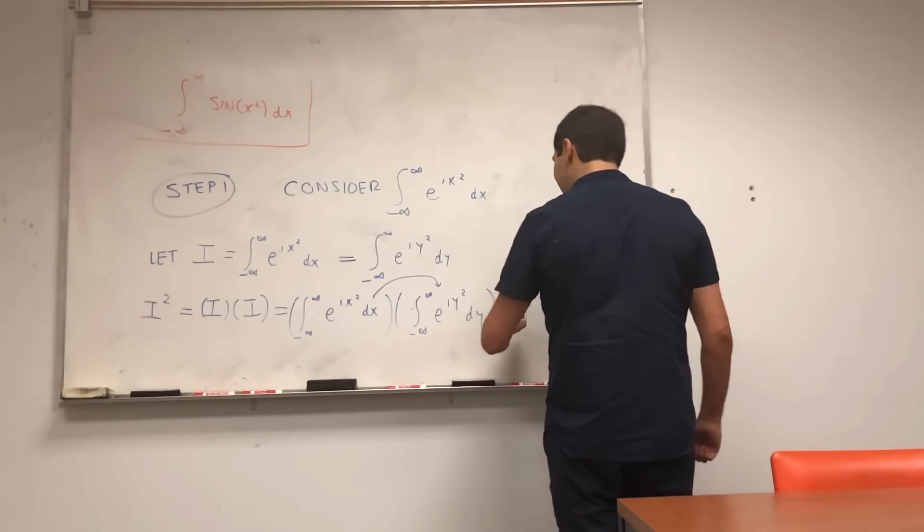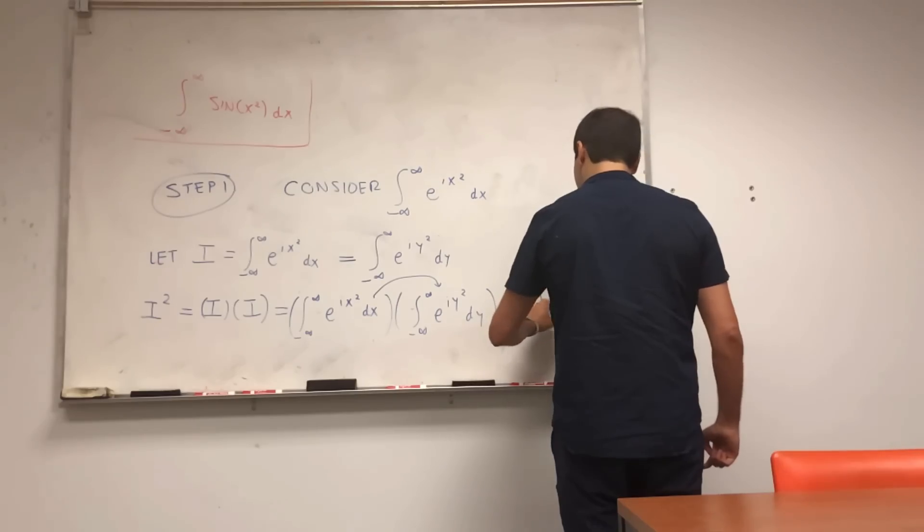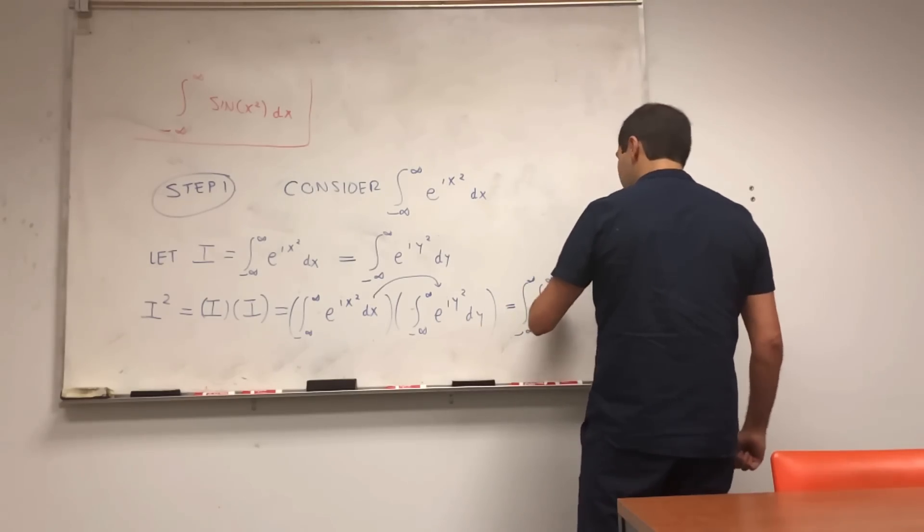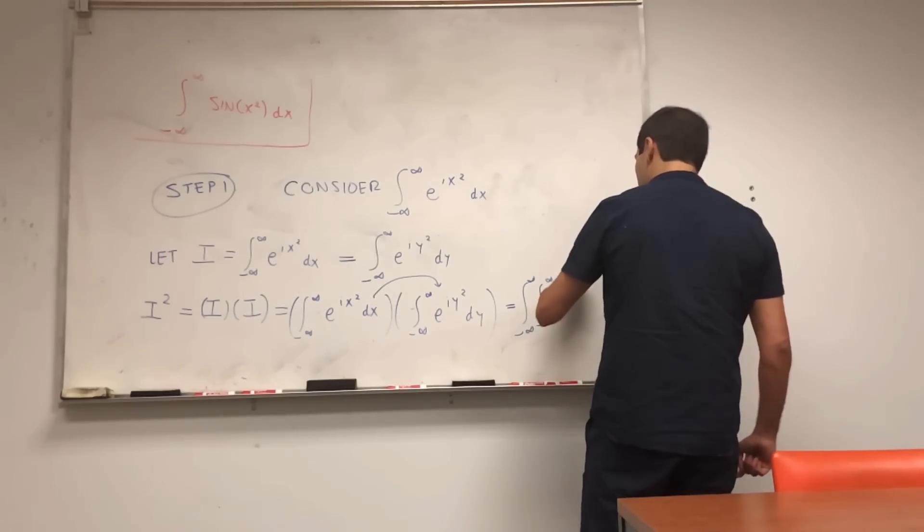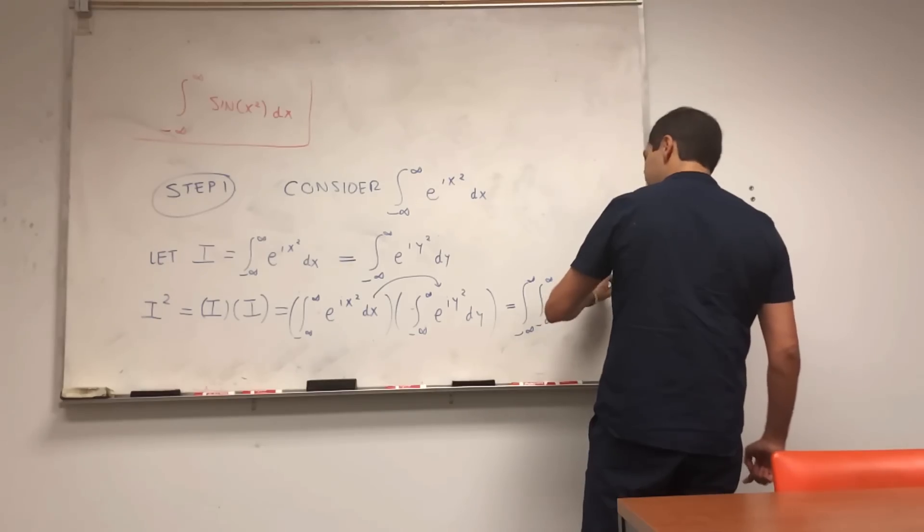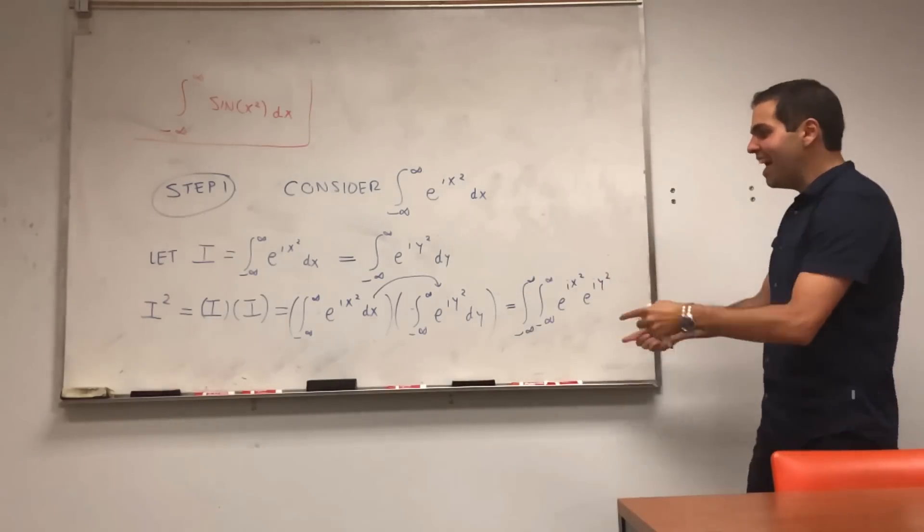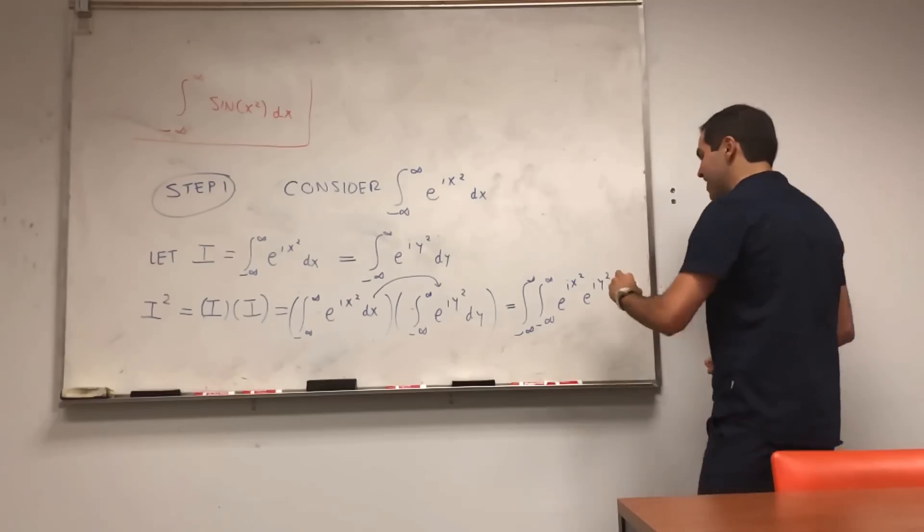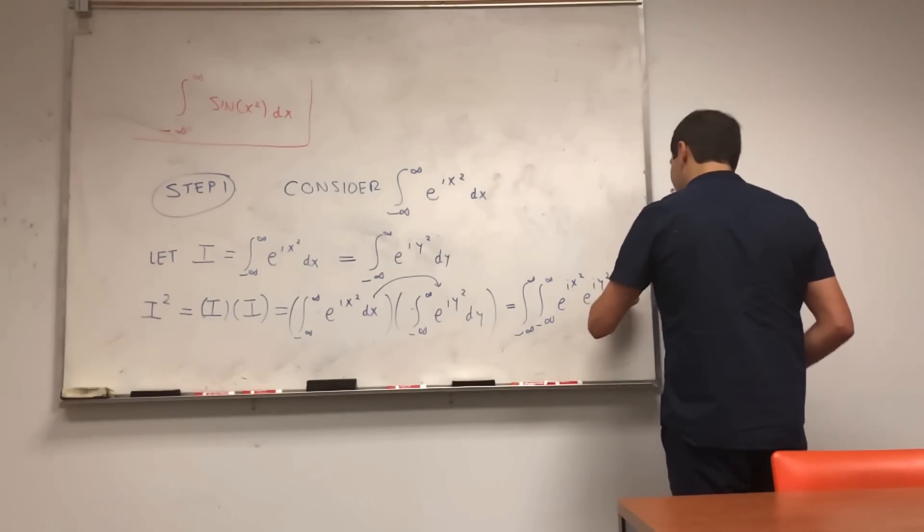And what we really get is a double integral of e to the ix squared, e to the iy squared, technically dy dx, but we can Fubini it out. So let's say, just say dx dy.